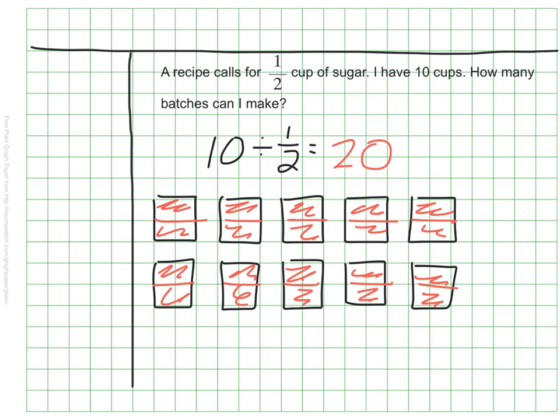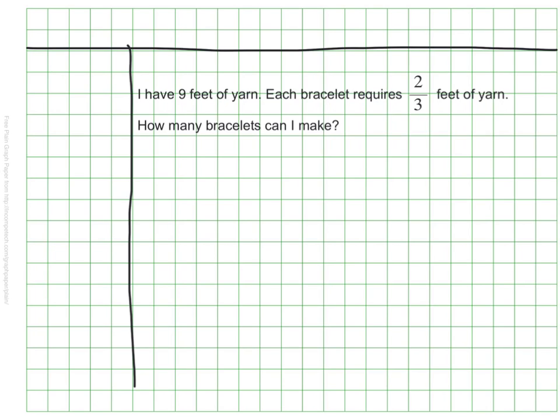We're going to do one more. And this time, we're going to have to do a little work at the end to get our complete answer. This time, my problem reads that I have 9 feet of yarn. And I'm going to make bracelets. Each bracelet requires 2 thirds of a foot or 2 thirds feet of yarn. How many bracelets can I make?